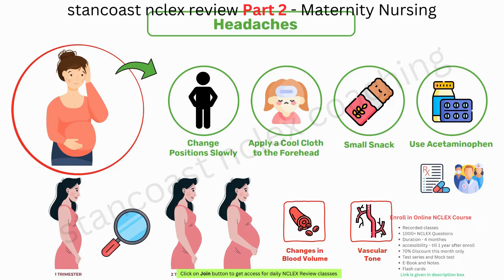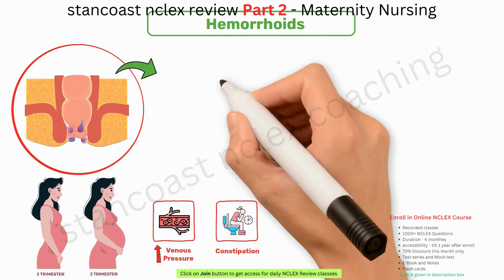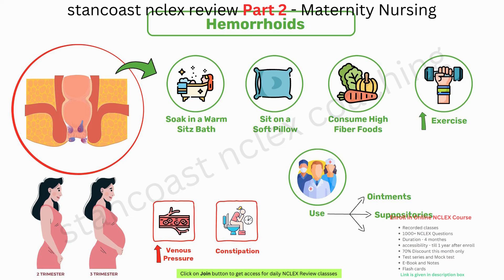Hemorrhoids are common in the second and third trimesters due to increased venous pressure and constipation. To alleviate discomfort, it is recommended to soak in a warm sitz bath, sit on a soft pillow, consume high-fiber foods, increase exercise such as walking, and use ointments, suppositories, or compresses as prescribed by the HCP.